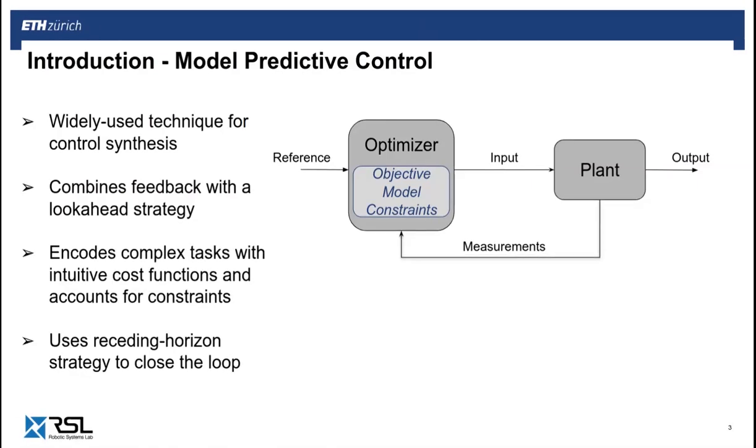Another strong point of MPC is its ability to encode complex tasks in a simple cost function, while also accounting for system constraints. The way it essentially operates is by repeatedly solving a finite-time optimal control problem in a receding horizon fashion.